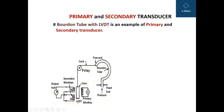The 'linear variable' part refers to the fact that you can vary the output voltage across the secondaries with the movement of the core in a linear way. Since the two secondary windings are connected in series opposition, you get the differential voltage at the output — that is why it is called differential. And since the arrangement is like a transformer, it is called a transformer. So in short, it is Linear Variable Differential Transformer.